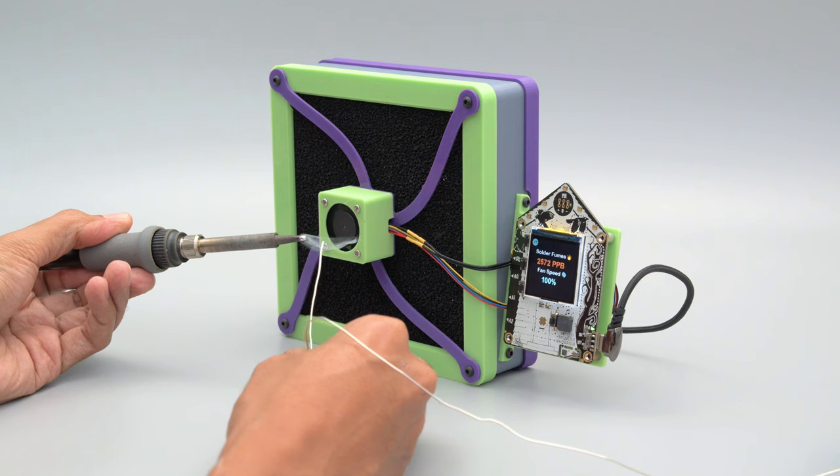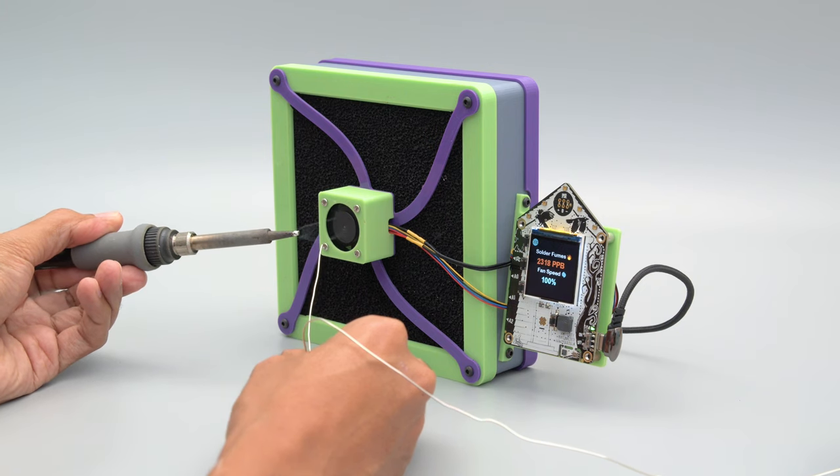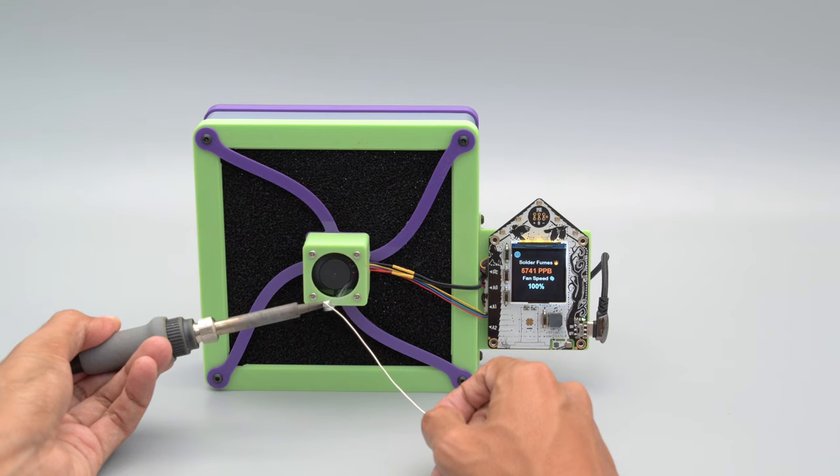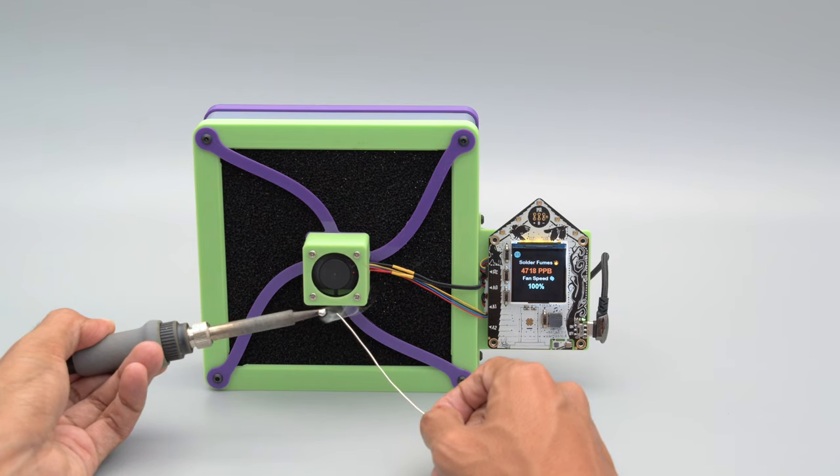The fan is controlled with PWM using an EMC-2101 fan controller. A mini fan in the center helps direct fumes to a SPG30 air quality sensor.